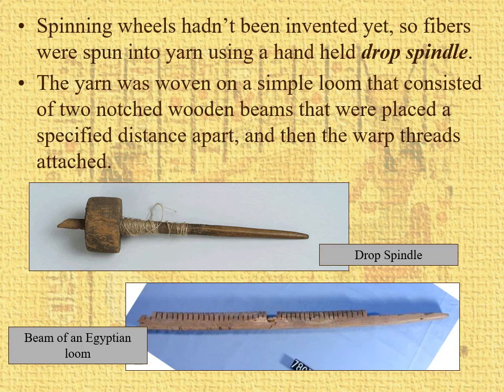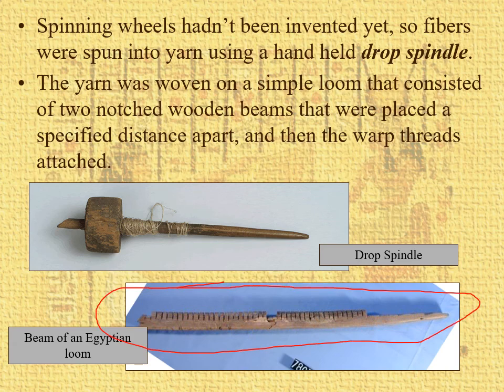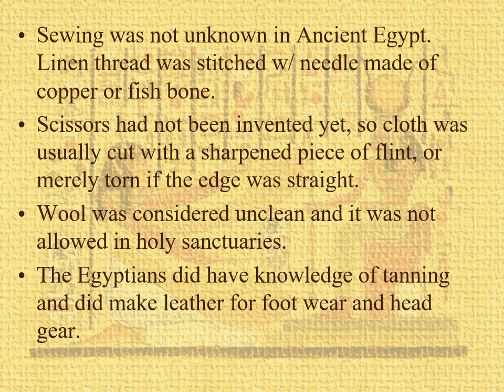Down here you can see an Egyptian beam loom. You'd have two of these, tacking one on the floor and the other a little further apart, and attach your warp threads to that, then your weft threads — a little bit primitive, as you can see. Sewing was not unknown, even though this is a drapery culture with a lot of draping. There is some sewing — linen thread stitched with a needle made of copper or fishbone.